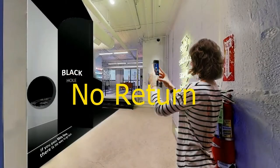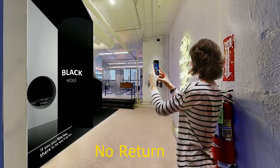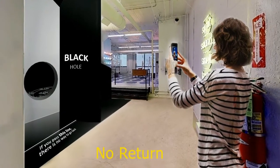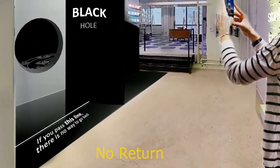So let's see what happens in our installation. As you get to our installation you see a black structure with a white wall as the entrance. On this white wall there is a black hole. On the ground there is a sentence saying if you pass this line there is no going back.